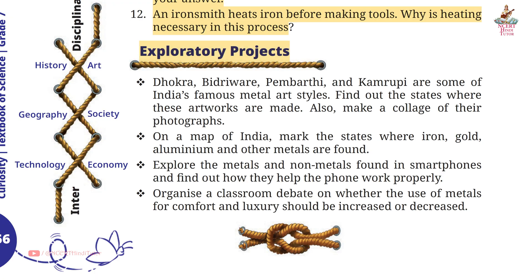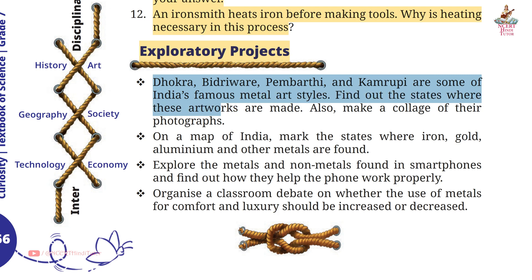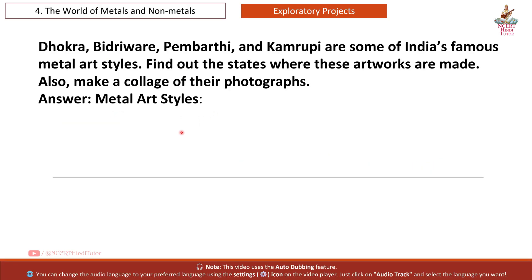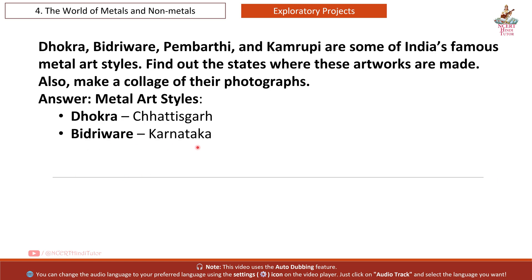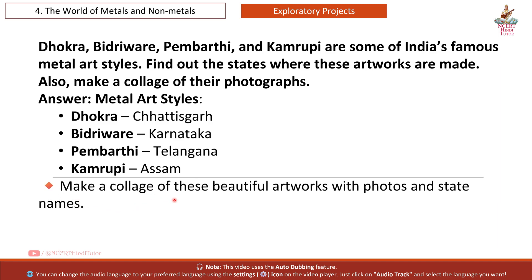Exploratory Project 1: Dhokra, Bidriware, Pembarthi, and Kamrupi are some of India's famous metal art styles. Find out the states where these artworks are made and make a collage of their photographs. Answer: Dhokra — Chhattisgarh; Bidriware — Karnataka; Pembarthi — Telangana; Kamrupi — Assam. Make a collage of these beautiful artworks with photos and state names.